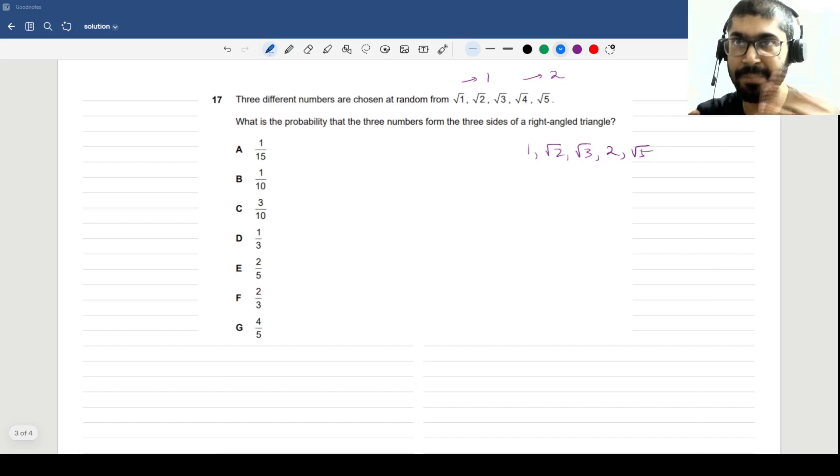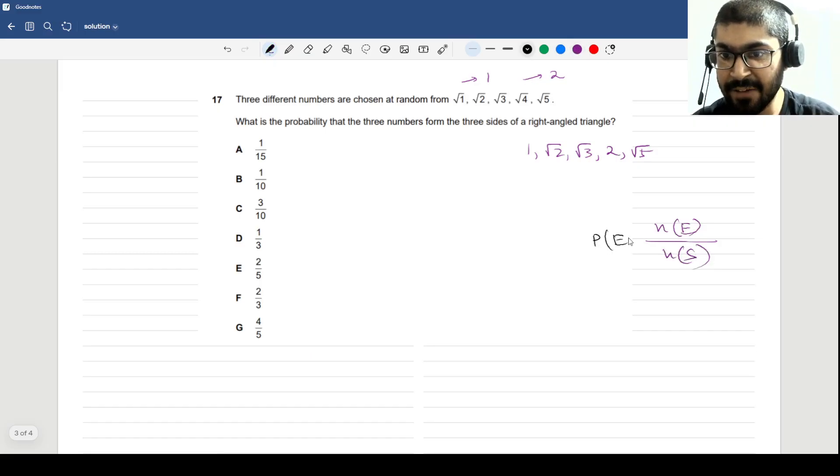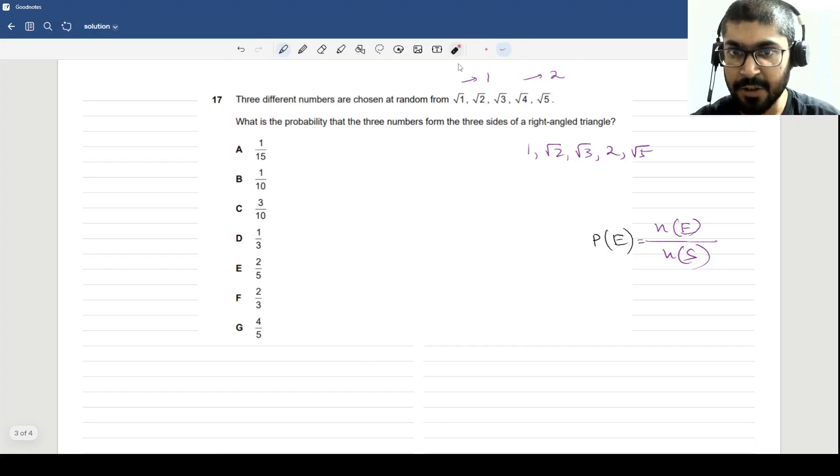The main question is what is the probability that these form the three sides of a right angle triangle. Whenever we calculate probability, the theoretical definition is n(E)/n(S), so total number of elements that come from our event divided by the total number of elements in the sample space. For this particular problem we will first identify the number in the sample space.